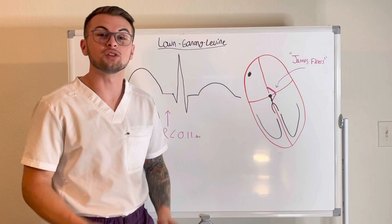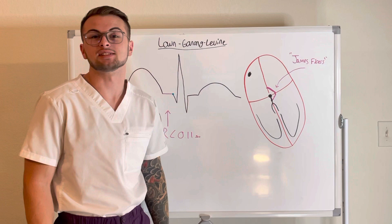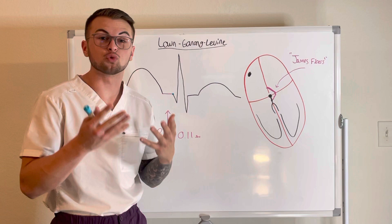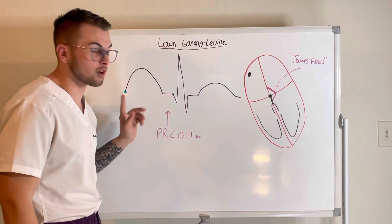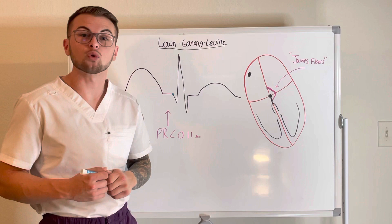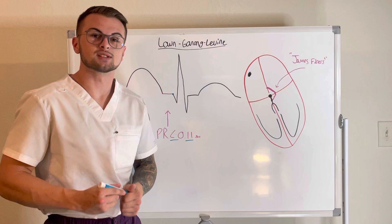Hello everyone and welcome back to Clinical Cousins YouTube channel, where today we're going to go over the shortened PR interval using Lam Ganong Levine syndrome, or LGL syndrome, as an example. A normal PR interval is anywhere between 0.12 and 0.20 seconds, measured from the start of the P wave to the start of the QRS complex. The PR interval is considered shortened when it is less than or equal to 0.11 seconds.